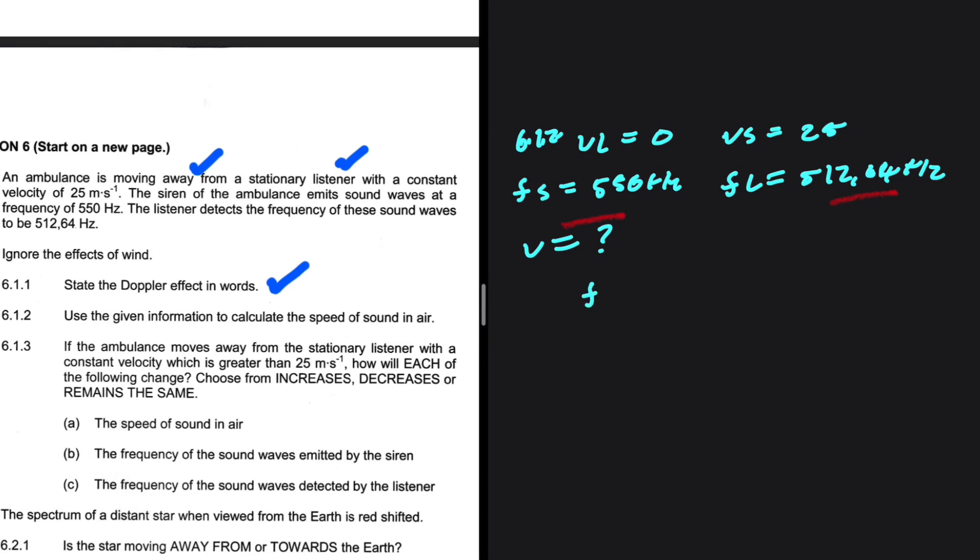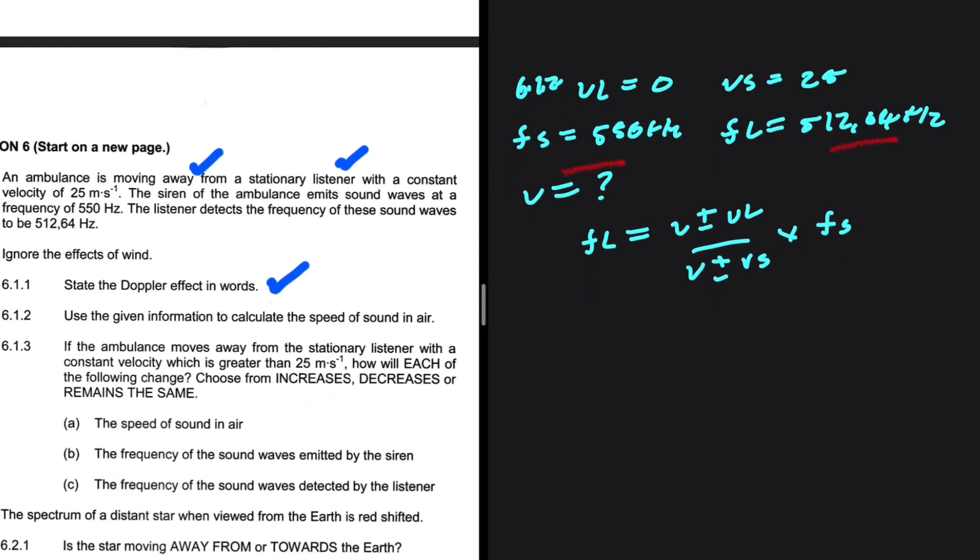Sticking to the basics, we're going to have FL, the frequency observed by the listener, being equals to V plus or minus the velocity of the listener, V plus or minus the velocity of the source, multiplied by the frequency as emitted by the source. The frequency experienced by the listener is 512.64, being equals to speed of sound in air, what we're interested in, plus or minus the velocity of the listener. The listener is stationary, so VL is equals to zero. Everything divided by V. The ambulance is moving away, so that is supposed to be plus 25 in the denominator. If it was moving towards, it would be minus 25, multiplied by the frequency of the source, and that is 550.